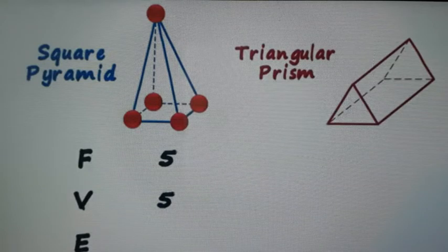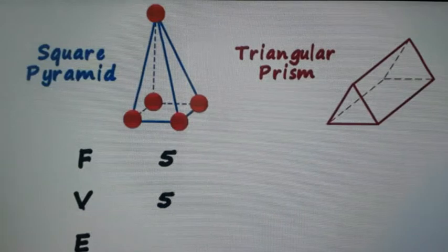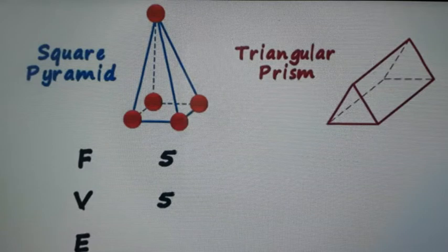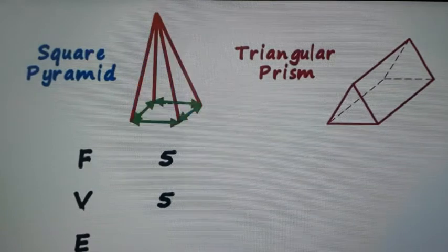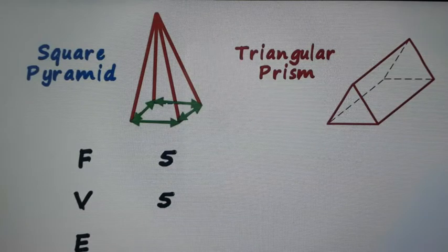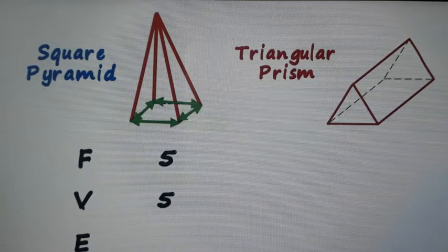So total number of vertices are five here. Now with the help of this Euler formula, we can find out the value of edges, or we can count it. There are four edges at the bottom and four edges are like pillars.